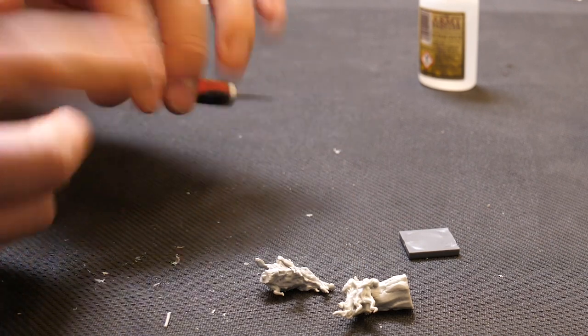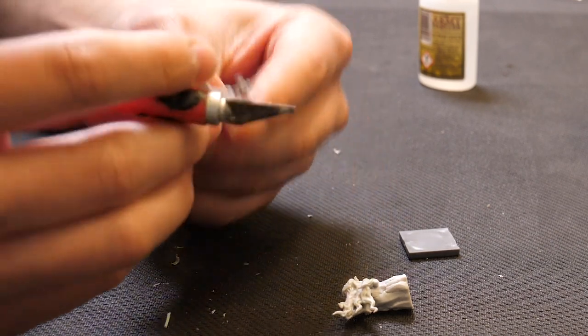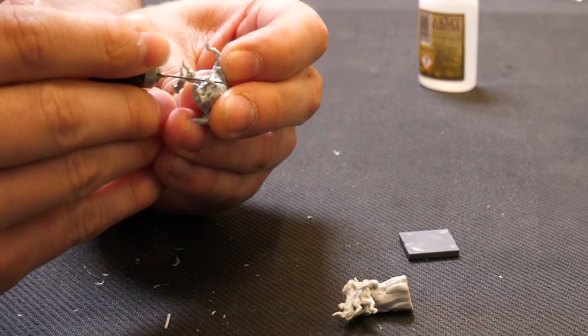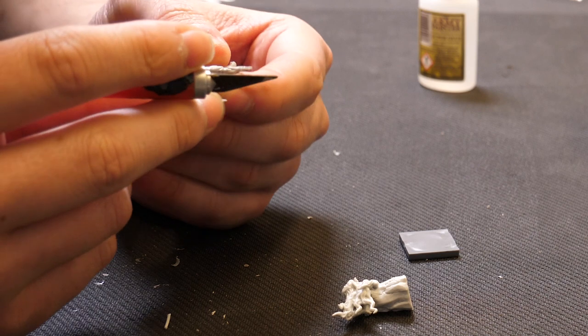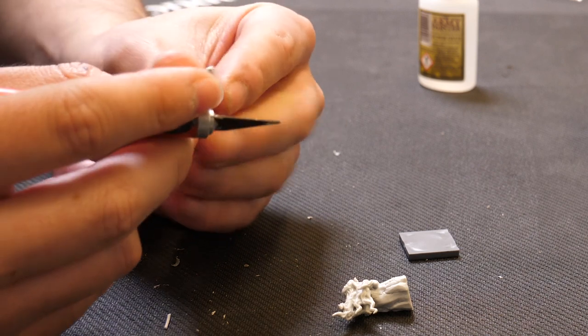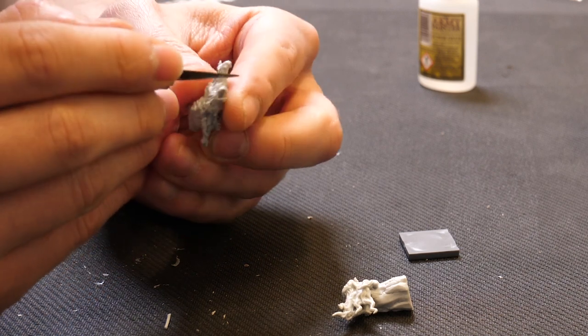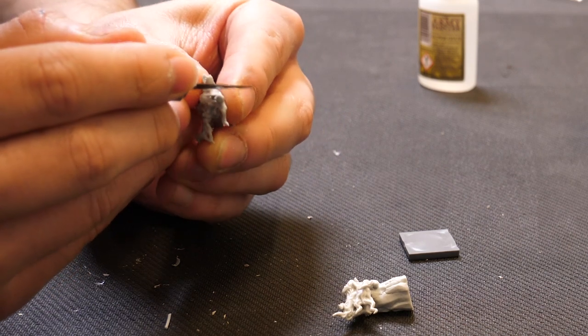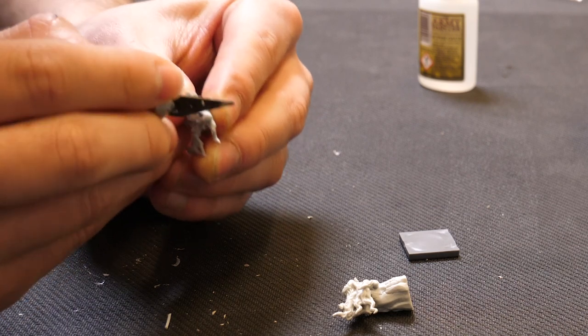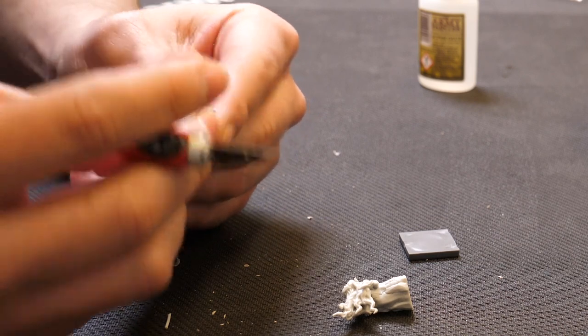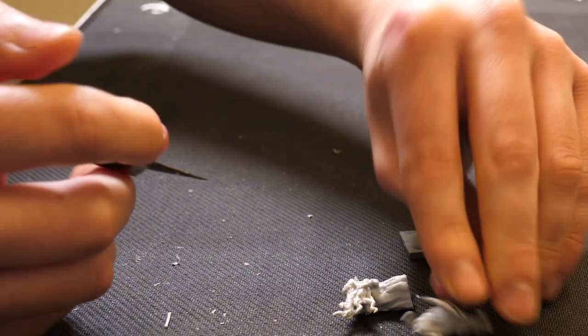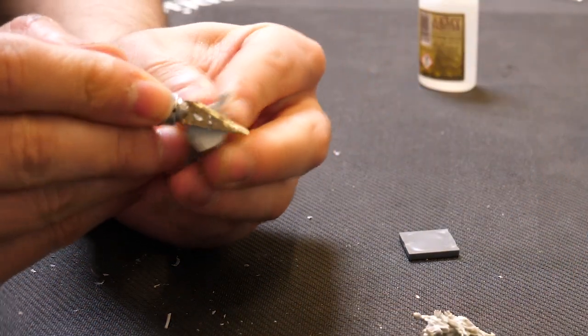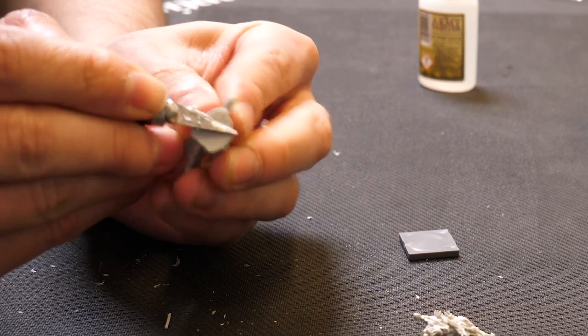There we go. And now we're going to go in with our craft knife. We're just going to clean up those bits that we just clipped off. We're going to be very careful with the resin because it is very delicate and can break if you put too much pressure on it. Clean up the bit at the bottom because we want a nice flat surface to be able to glue onto the base.